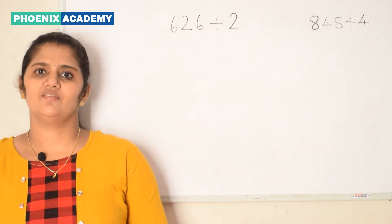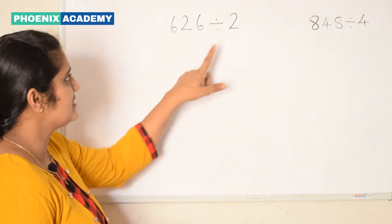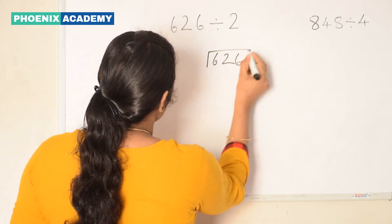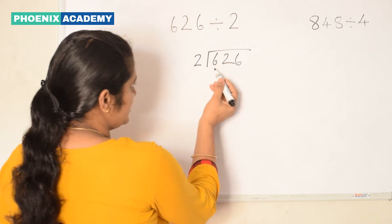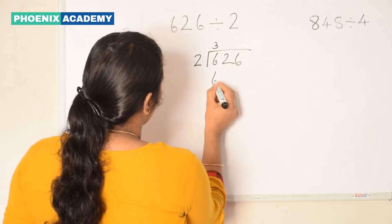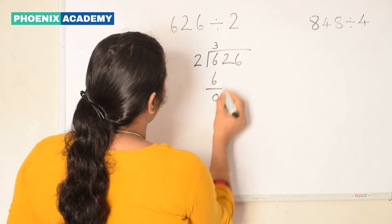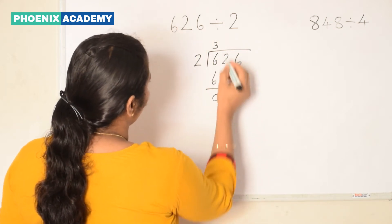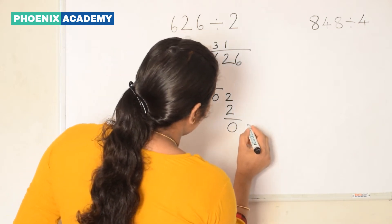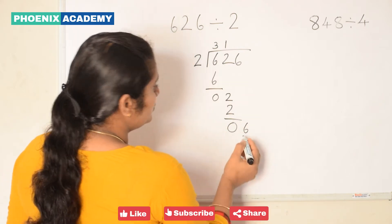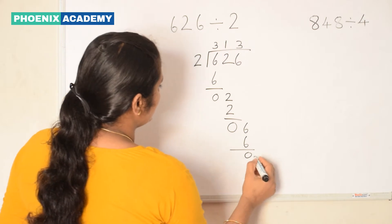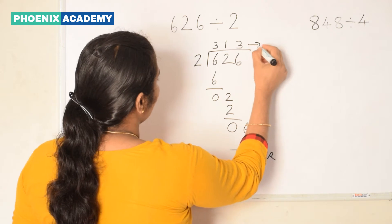Division of 3-digit numbers without regrouping. Let's solve these examples. 626 divided by 2. Let's arrange the numbers like this. First take the digit in the 100th place: 6. 6 is greater than 2. So we have 2 3s are 6. Write 6 below the dividend and subtract. Bring down the 10th digit and divide by 2. We know 2 1s are 2. Subtract, we get 0. Bring down the digit in 1s place and divide by 2. Here 2 3s are 6. We get the remainder as 0 and quotient is 313.